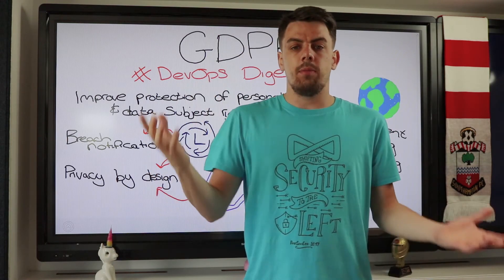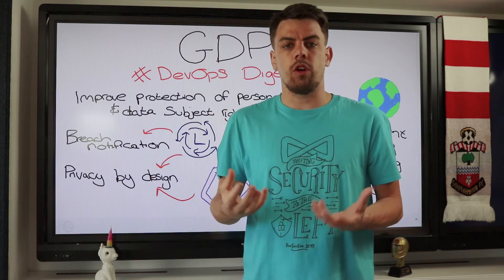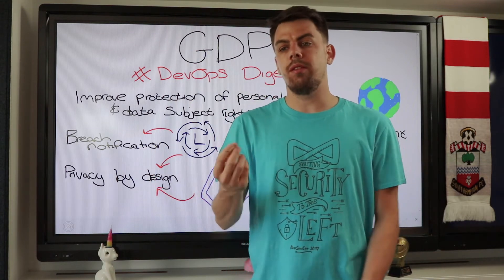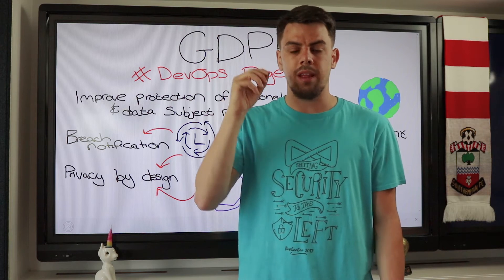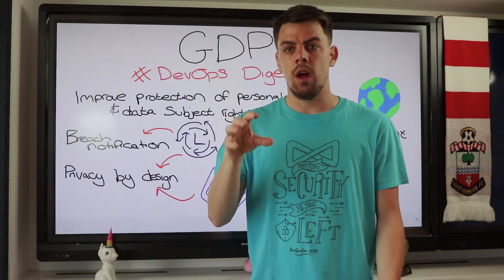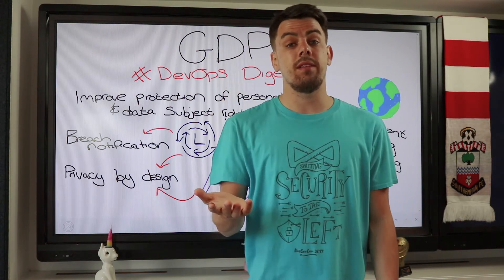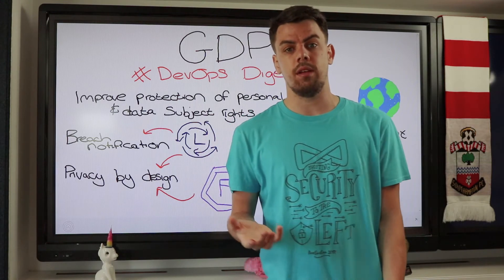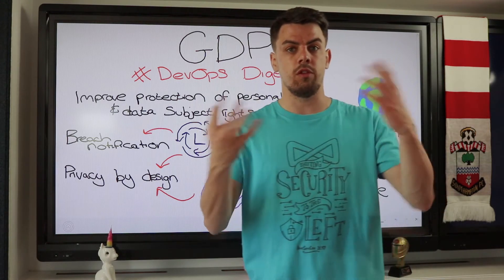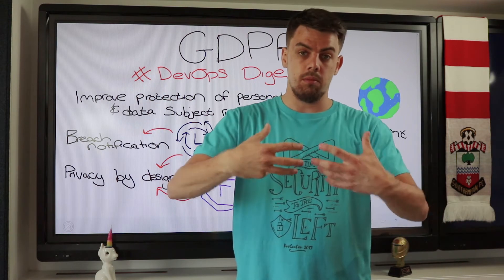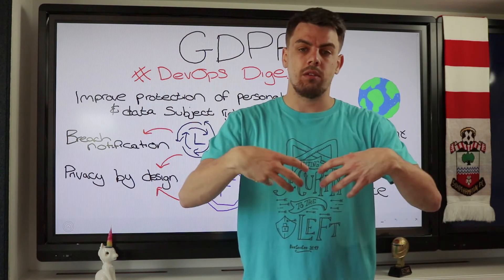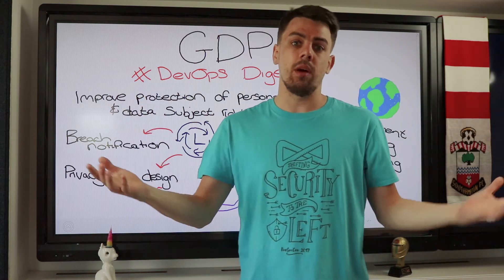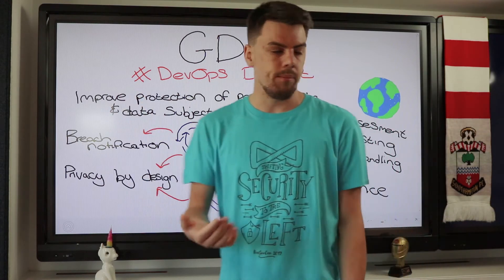Developers find it easy — they just pull down open source code and use it to help build the application. The problem is you don't actually know the security risks around that. The biggest example of this is the Equifax and Struts vulnerability. Equifax was using Struts, a vulnerability was discovered, Equifax got hacked, all the data got leaked — and you can read up in articles about how that went for them.